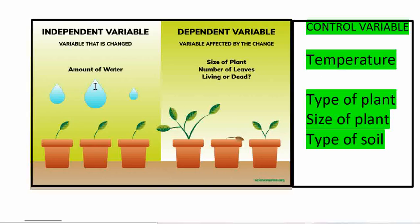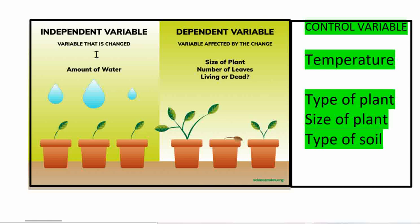For example, we want to do an experiment with plants. We have three pots. What we want to change is the amount of water — that is the independent variable, the one that we change. This one gets little water, this one medium water, and this one a lot of water. Then we observe the change — the variable affected by the change is the dependent variable. We can measure the size of the plant, number of leaves, or whether it is living or dead. The size of the plant is dependent on how much water is applied.